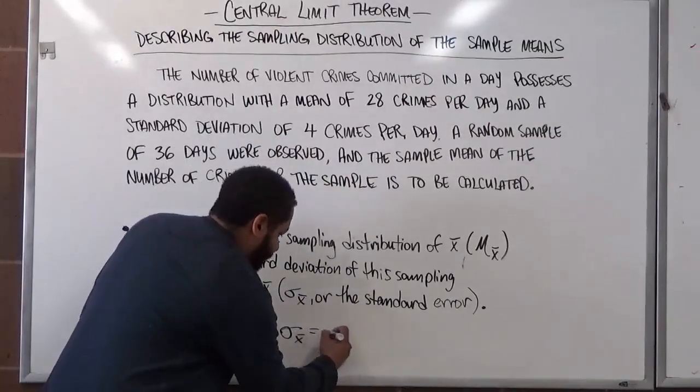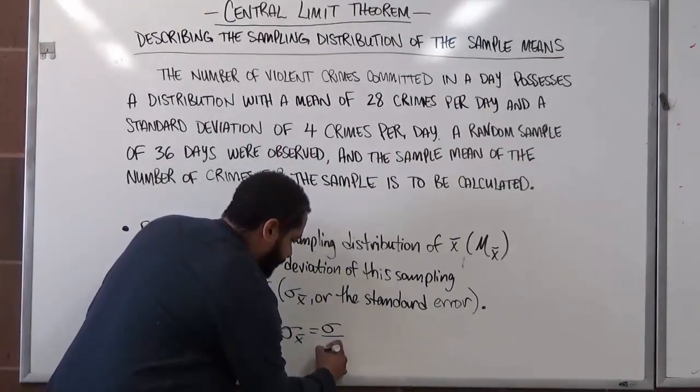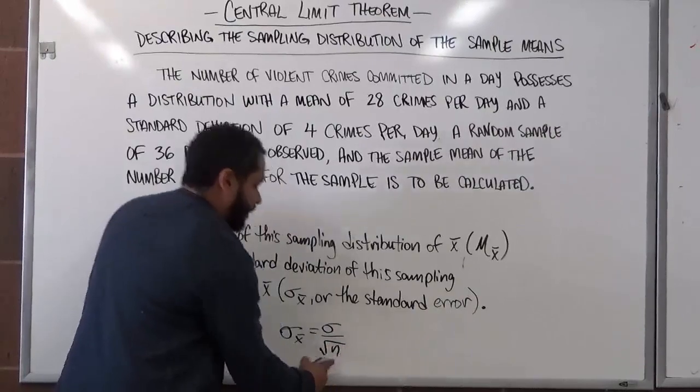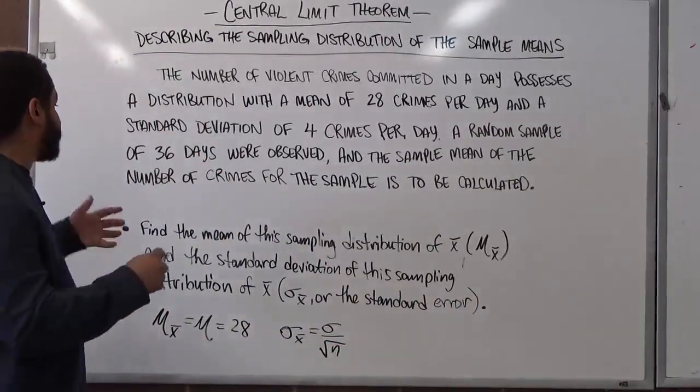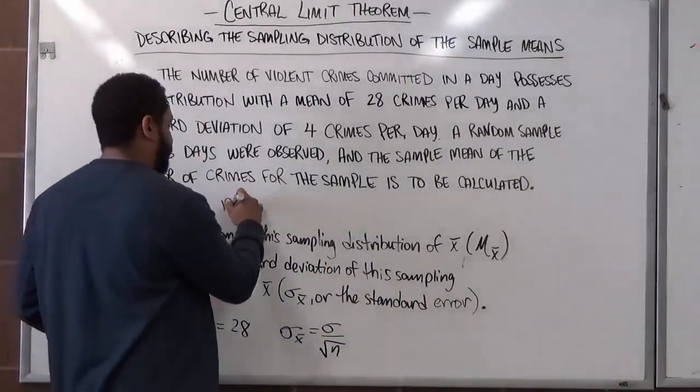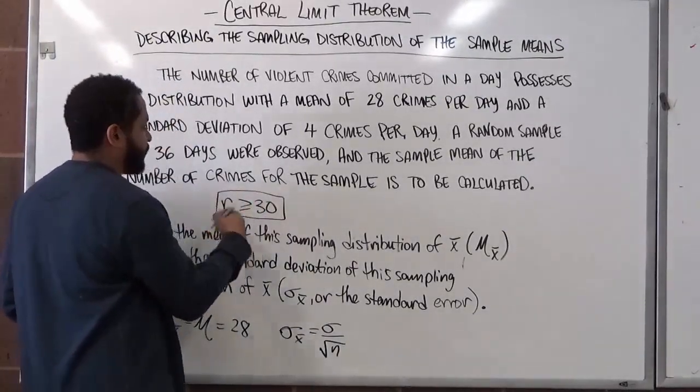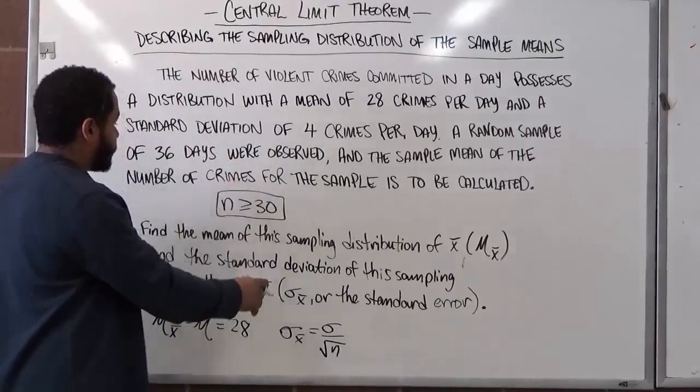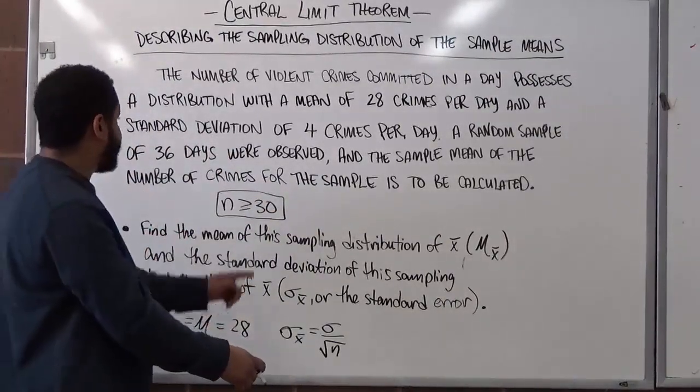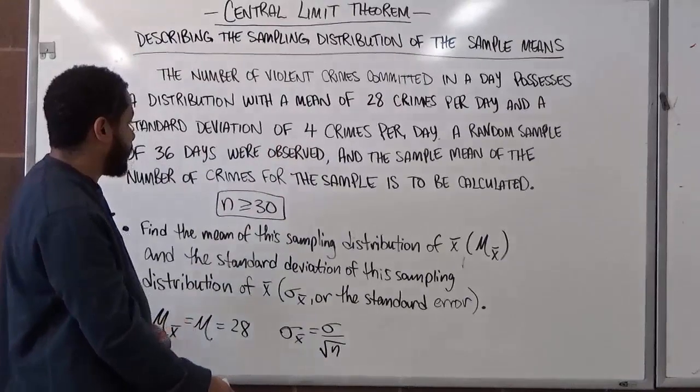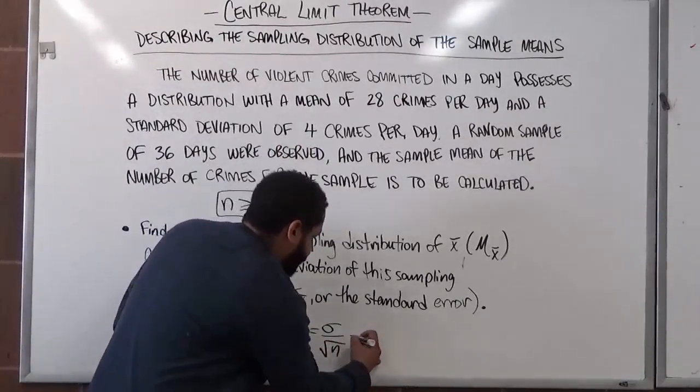We're going to get the standard deviation divided by the square root of n, where n is the number of samples that we have. And in this case, we have n being greater or equal to 30, which means we're using the central limit theorem's formula. And also, we have our σ right here, which is 4 crimes per day. So we're going to get 4.